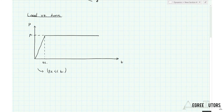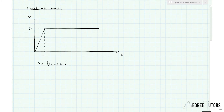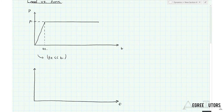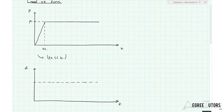Let's draw the response for the structure versus time. We'll mark on this value delta one, which was the static deflection seen previously. Previously the response mirrored the load - it rose up to a value at t1 and stayed constant. But now when we apply that load rapidly we get a totally different behavior.